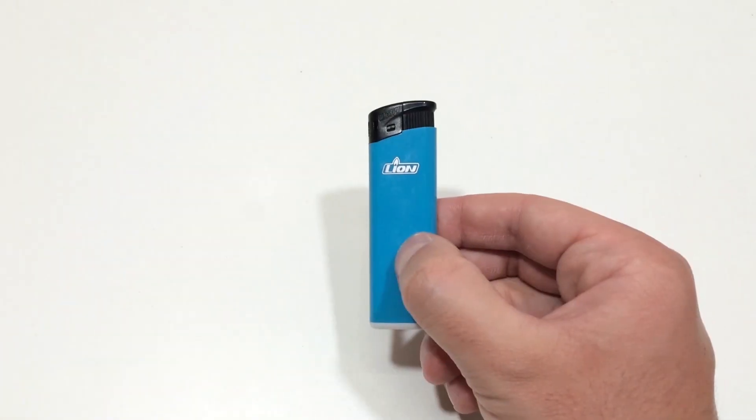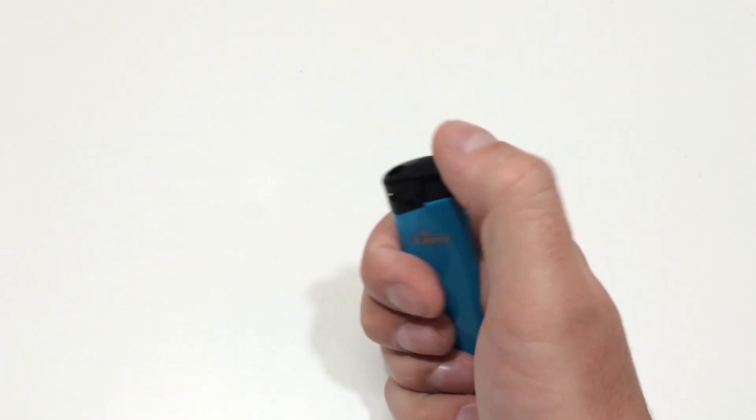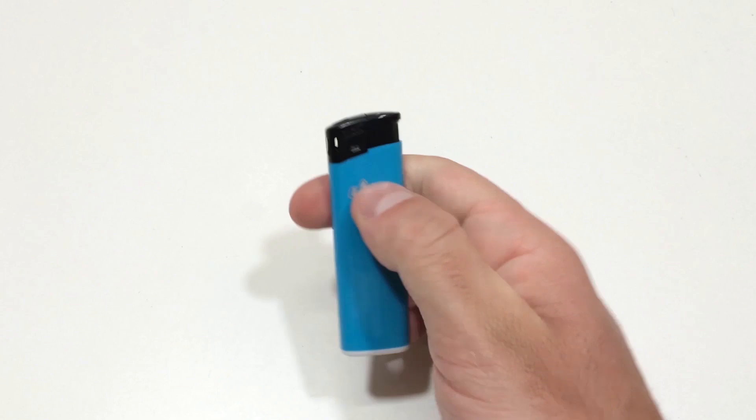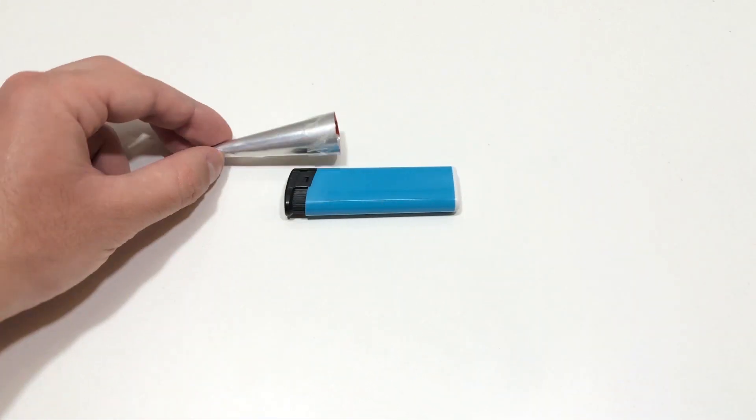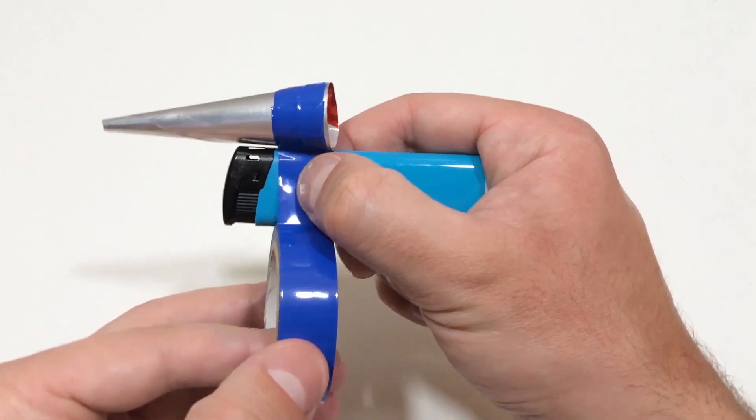Now here's the game changer. We're attaching this cone straight to the lighter. The better we secure it, the better it works. So, grab some electrical tape and wrap it tight. This thing needs to hold up under heat.